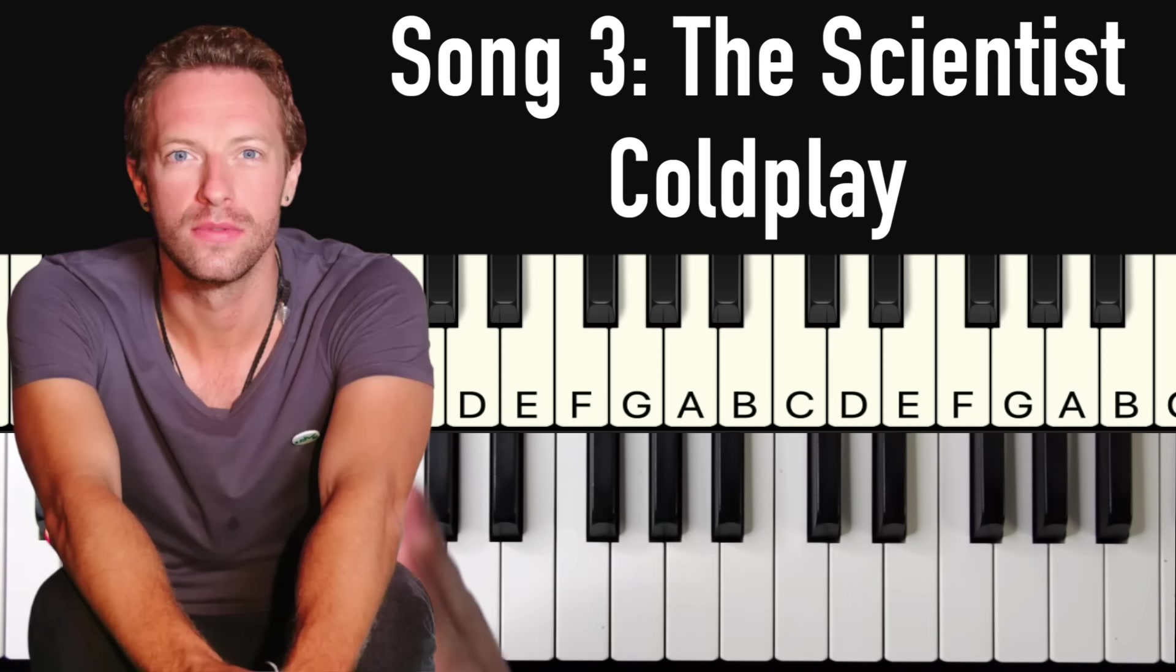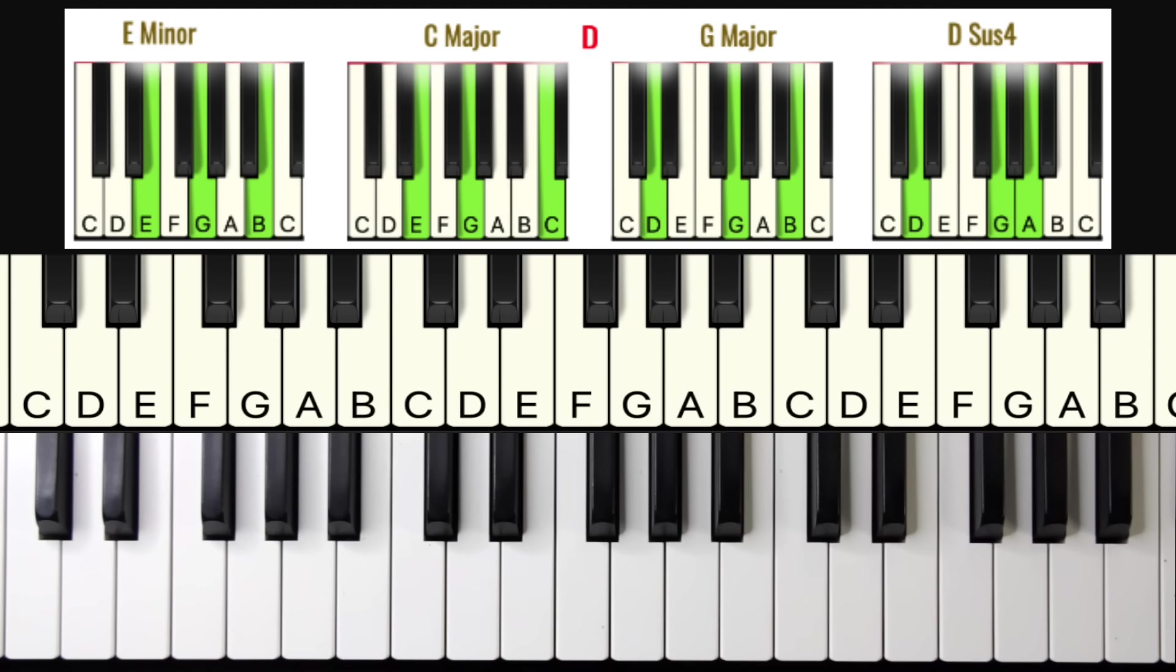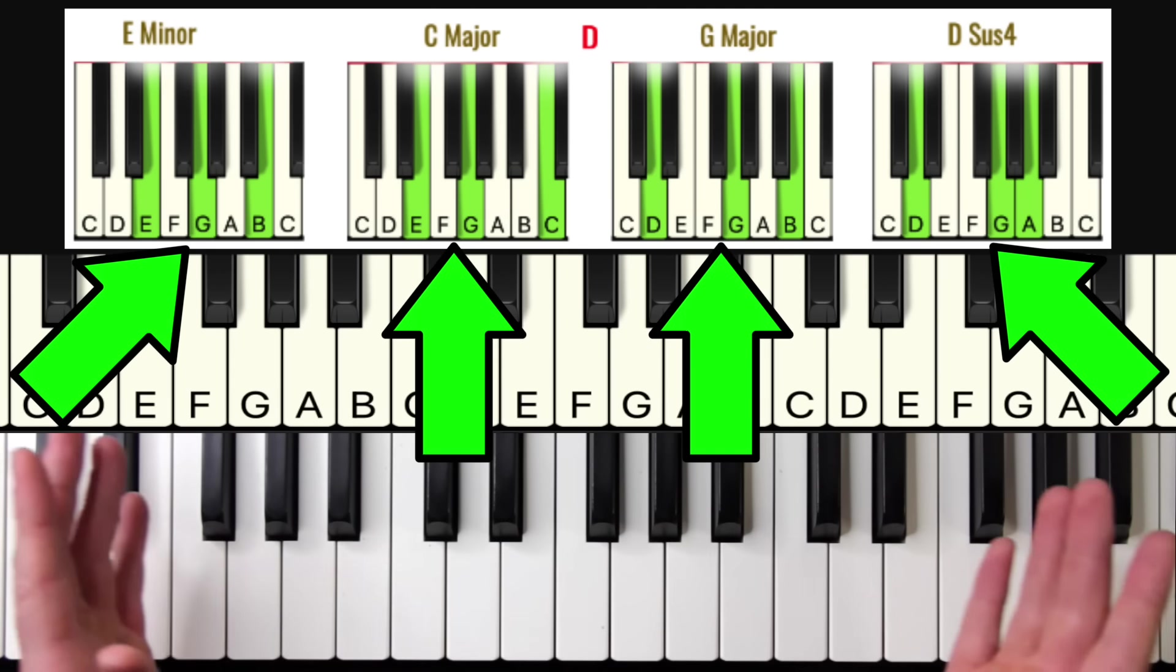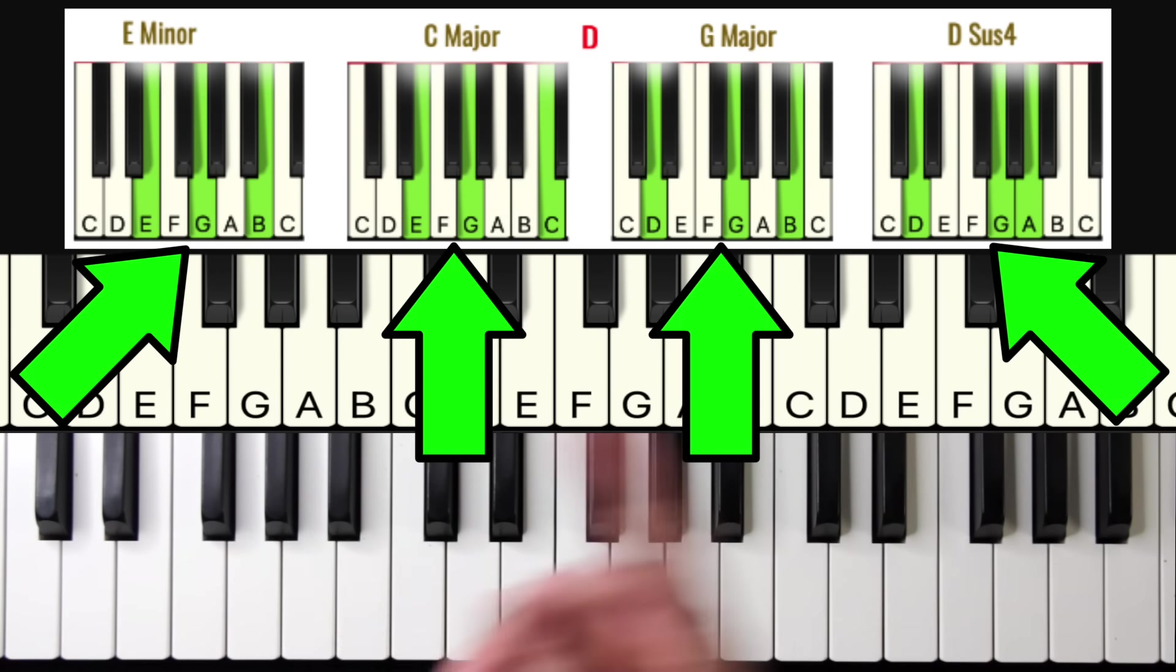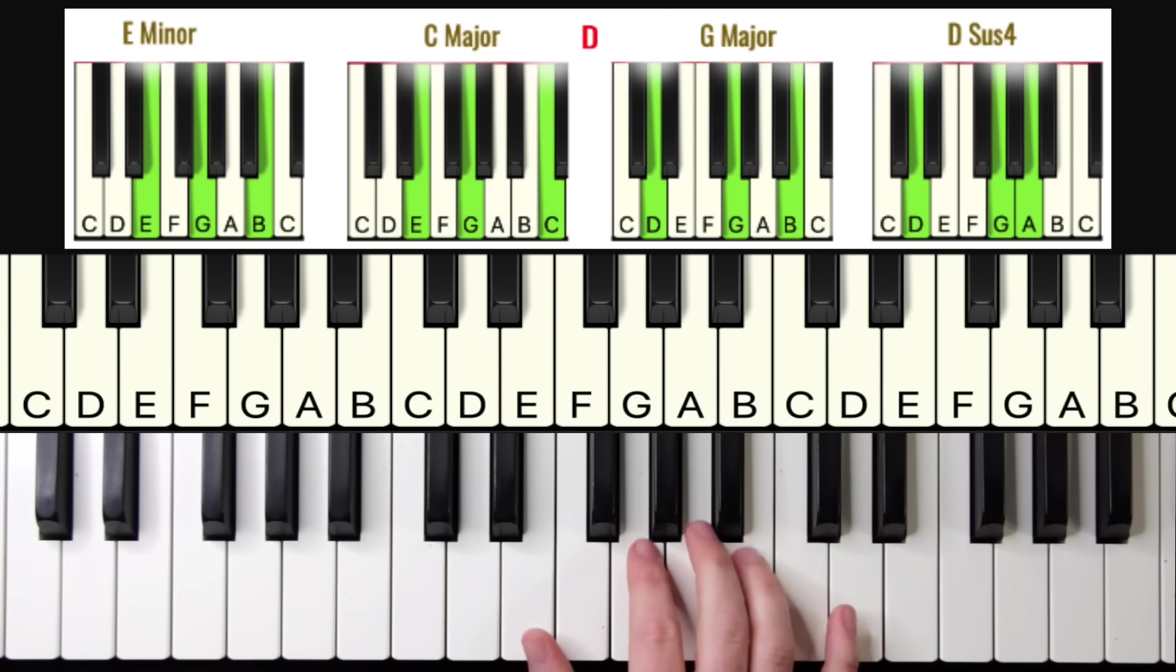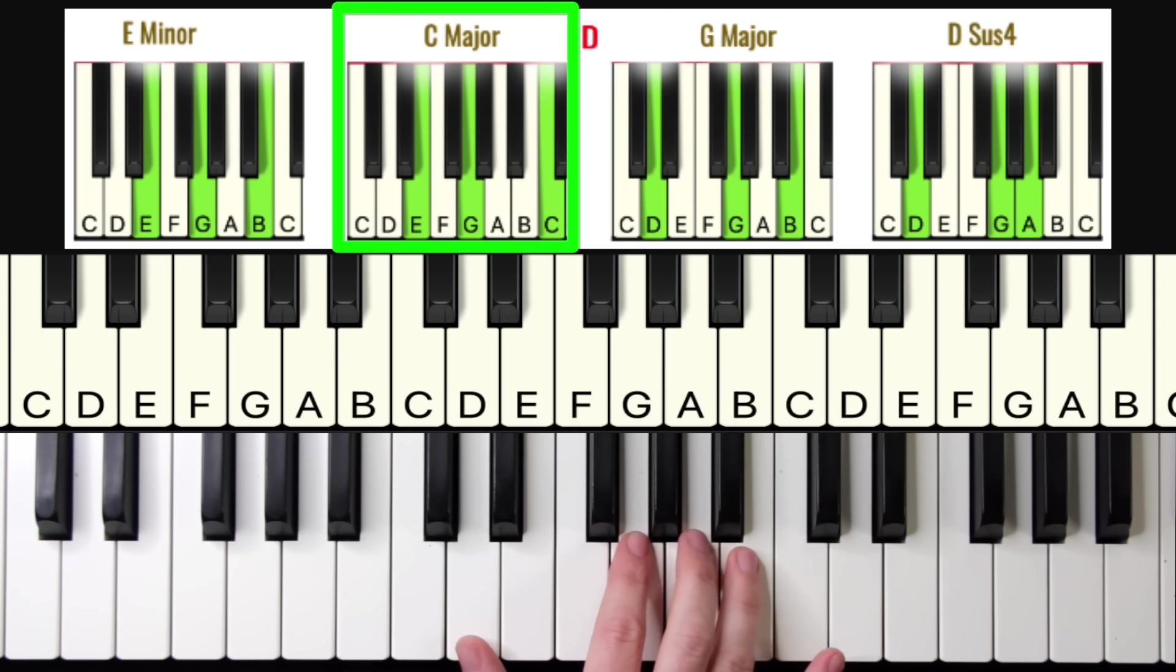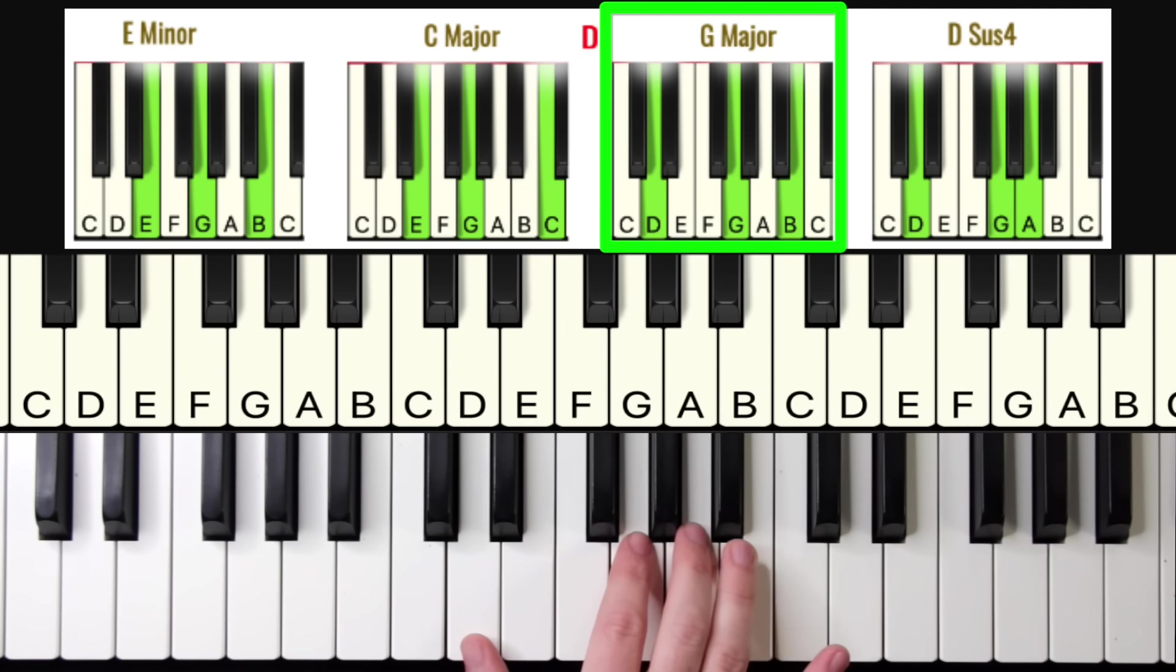All right, on to the romantic song, The Scientist by Coldplay. This song makes people absolutely fall in love. Now, as you can see, the chords are actually the exact same chords from the other songs, just in a different order. How easy is that? So this time, we start with E minor, then C, then G, then D sus.